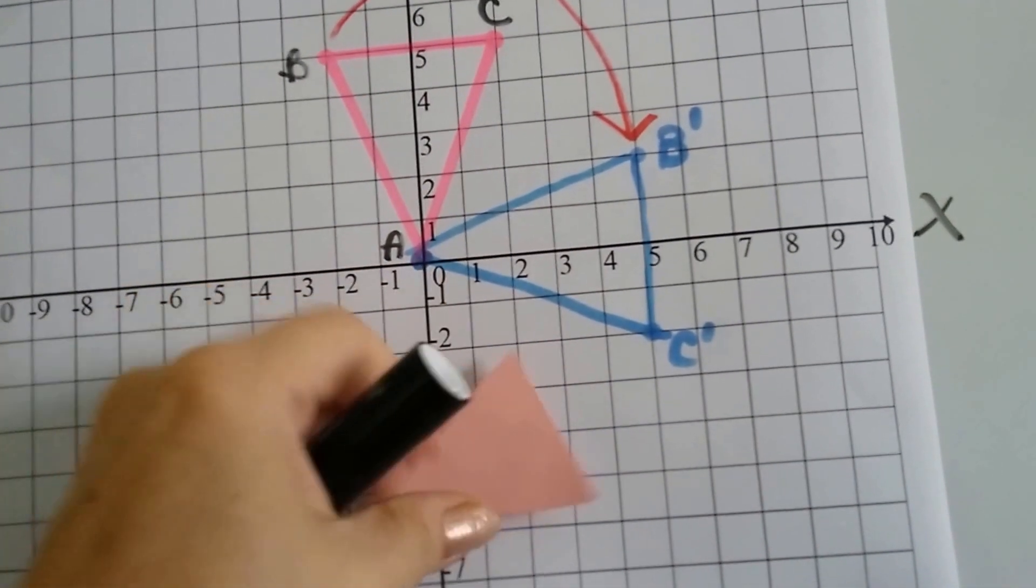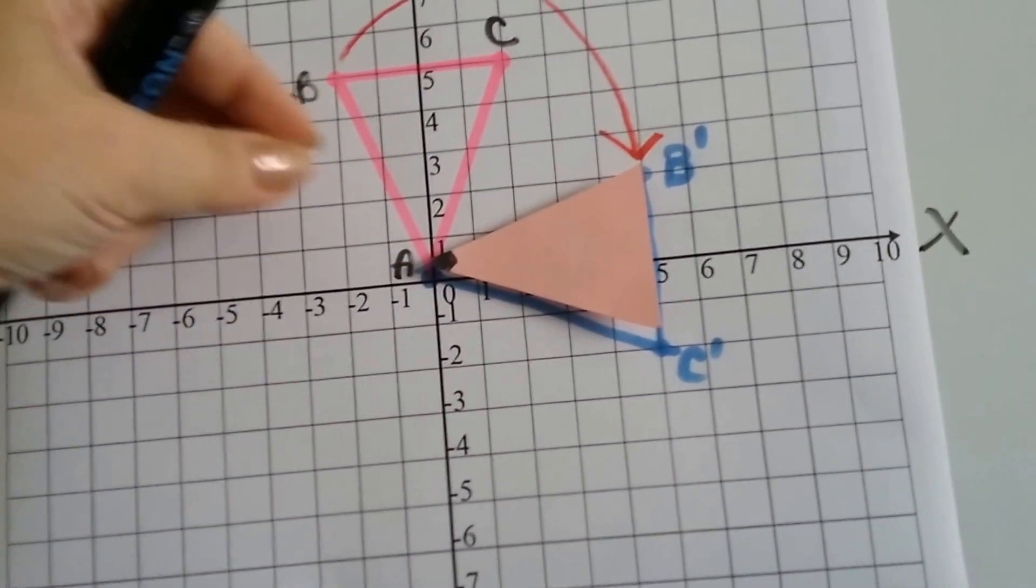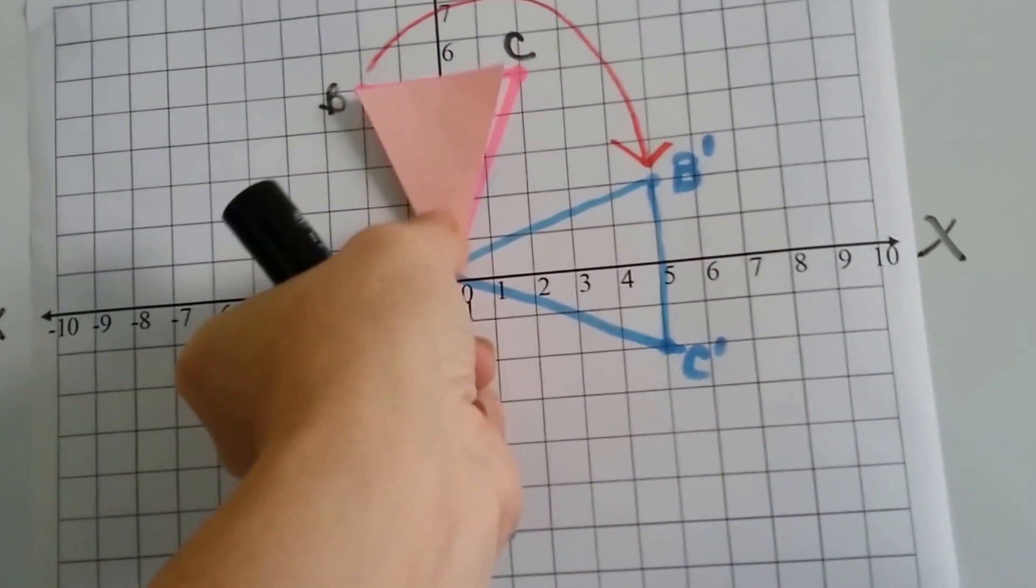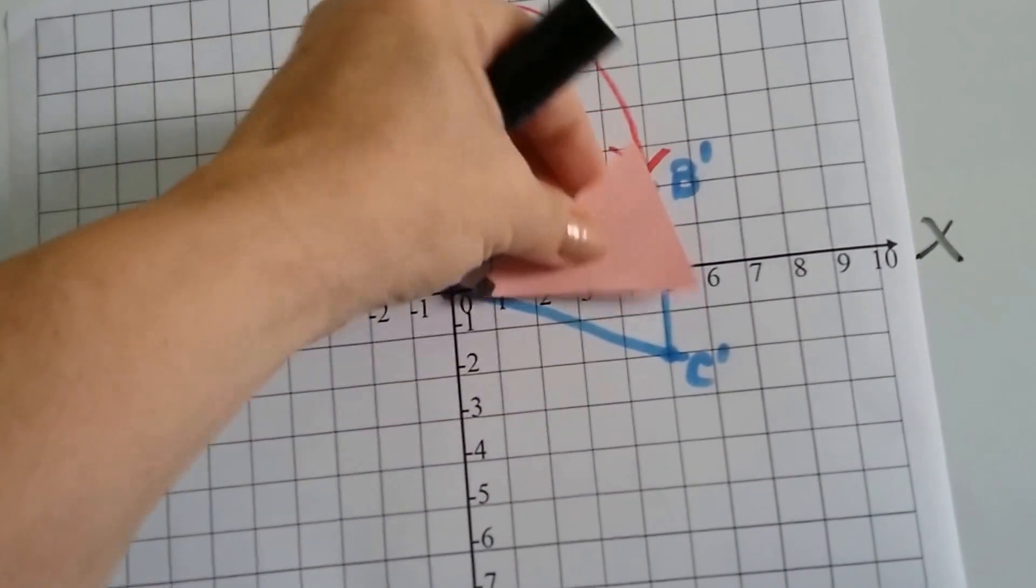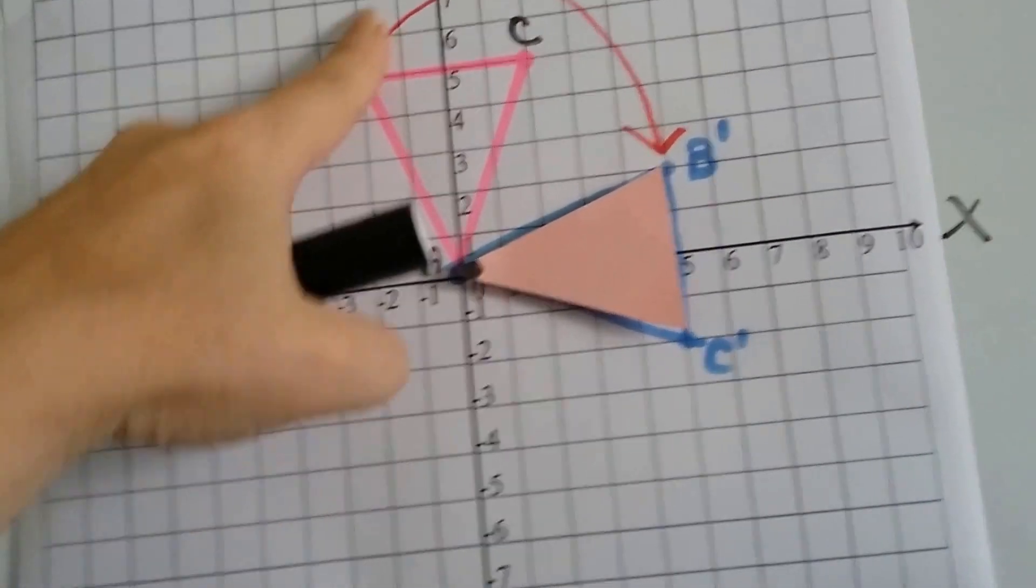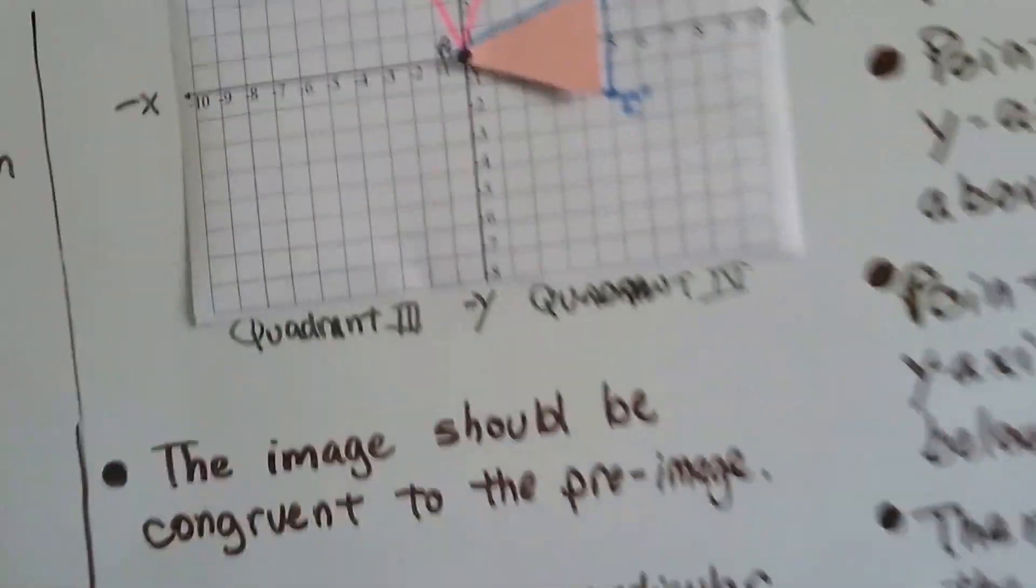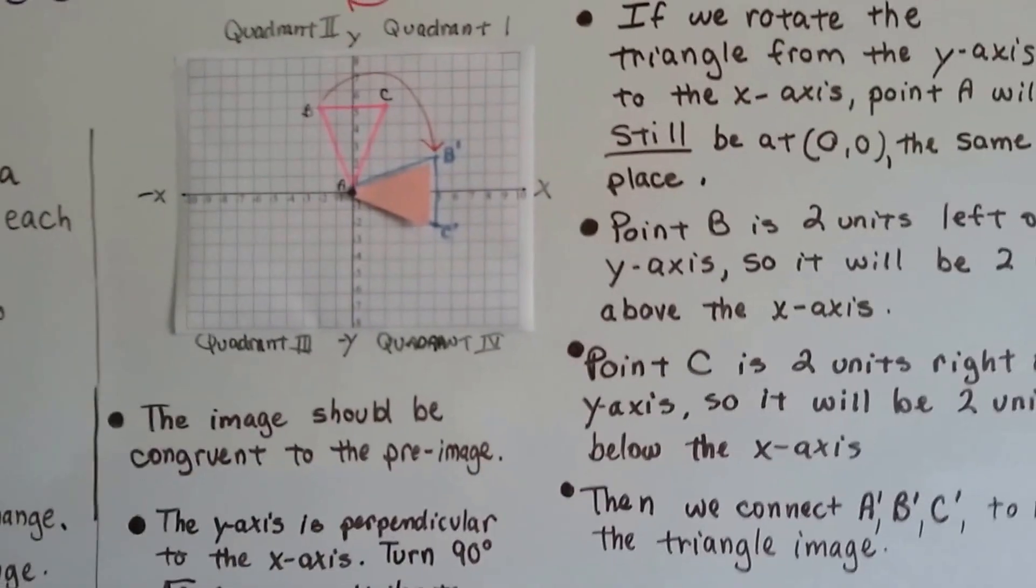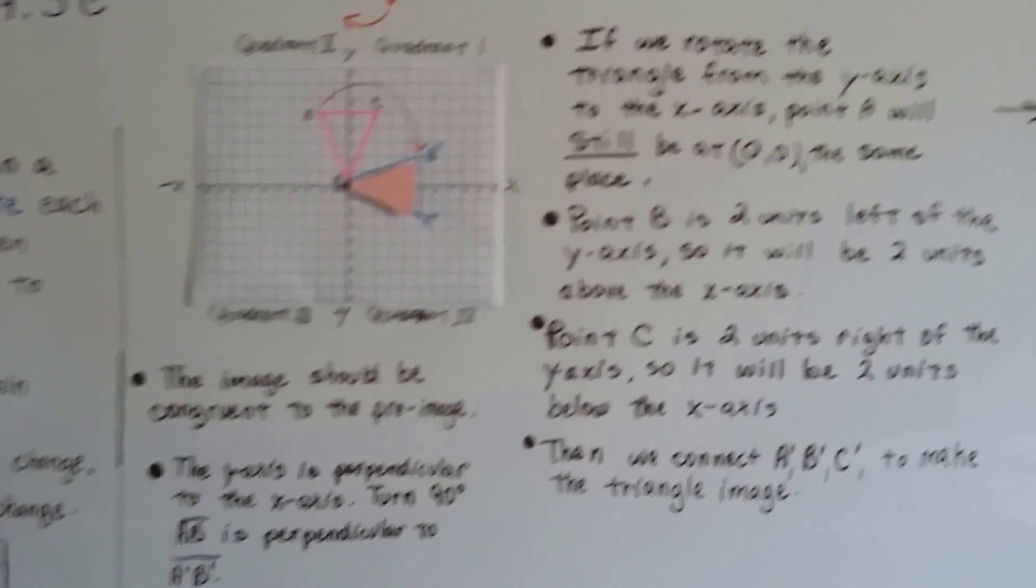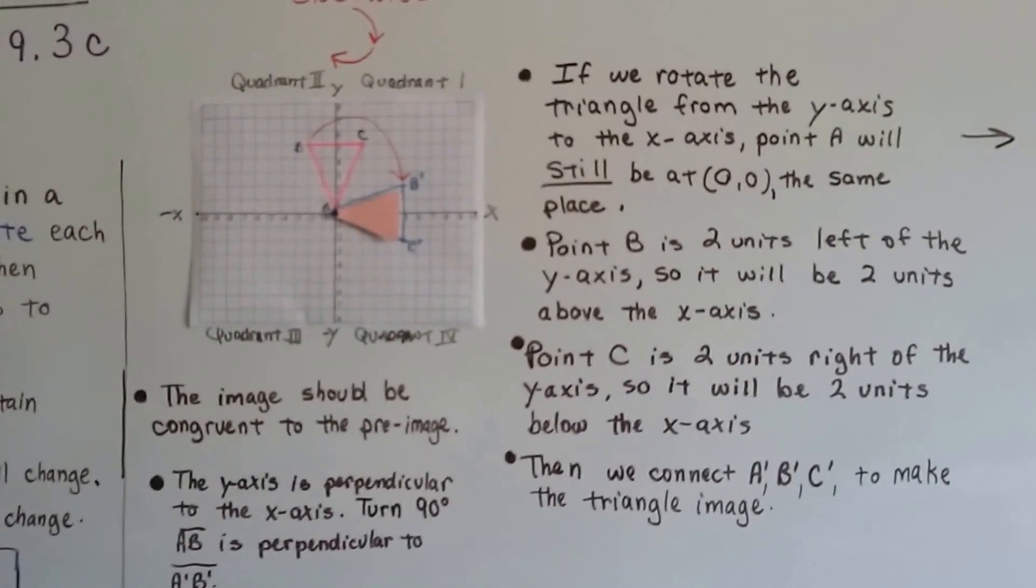So, the origin is the center of rotation, and the entire triangle turned 90 degrees. It went, just like that. B came around and is here, C came around and is here. The shape did not change, only the way it's sitting changed, only its position changed.